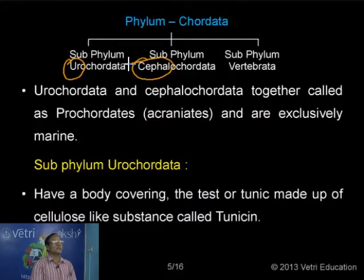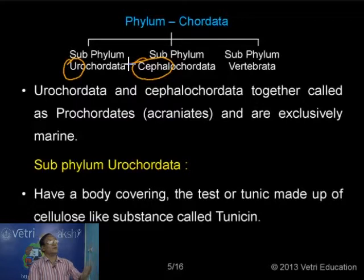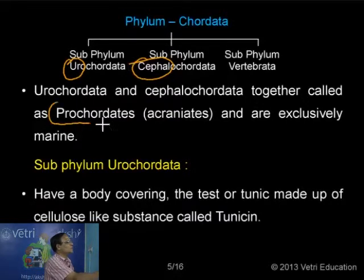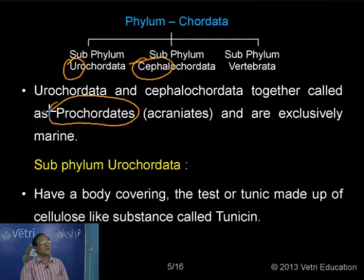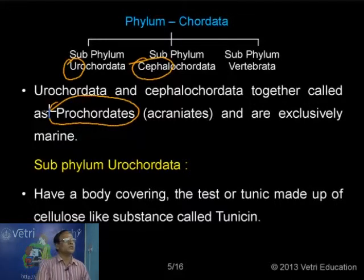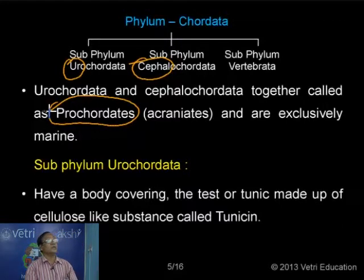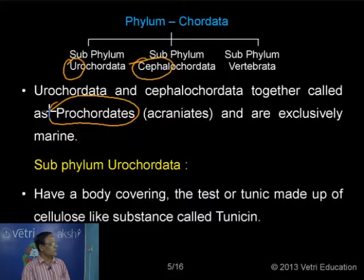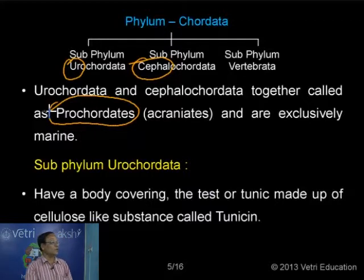Urochordata and Cephalochordata are together called Protochordata because these are the first formed chordates. In the case of Protochordata, there is no cranium or brain box. We have a skull differentiated into the cranium and facial region, but in the case of Protochordata there is no specific skull, no specific cranium. That is why this group is also called Acraniata. They are exclusively marine - there is no representative of such animal groups in fresh water.